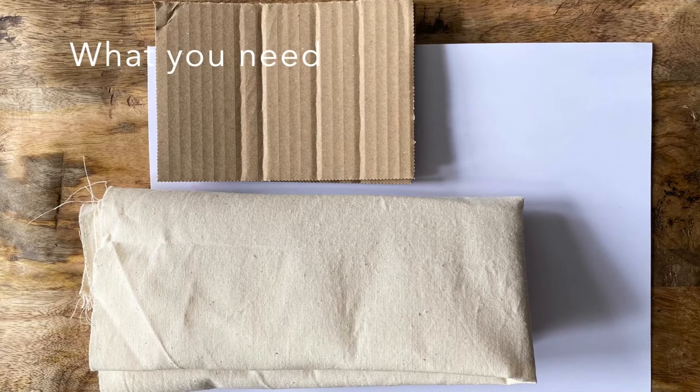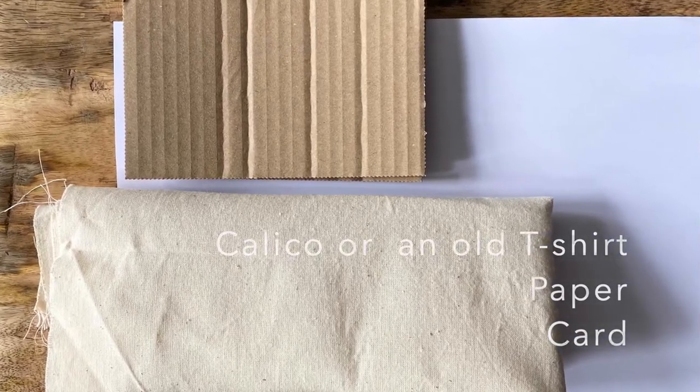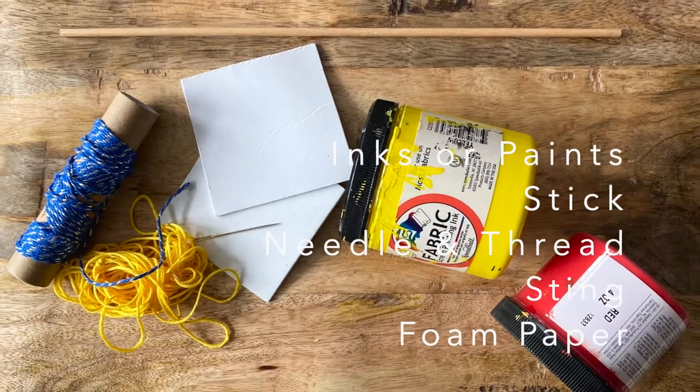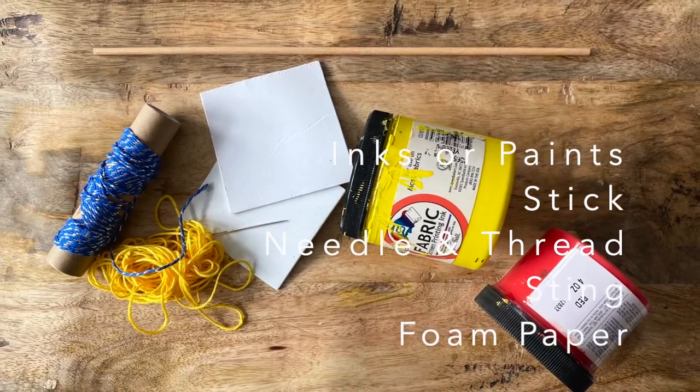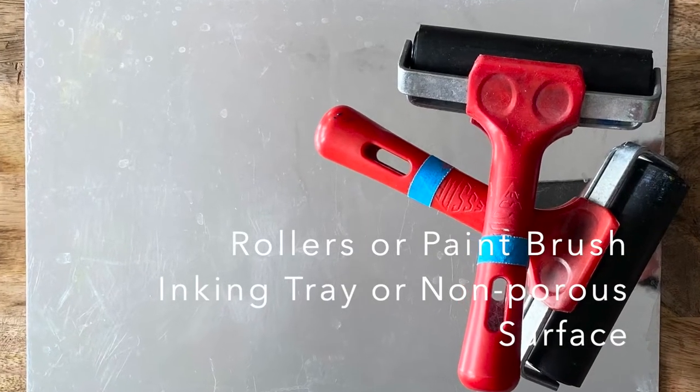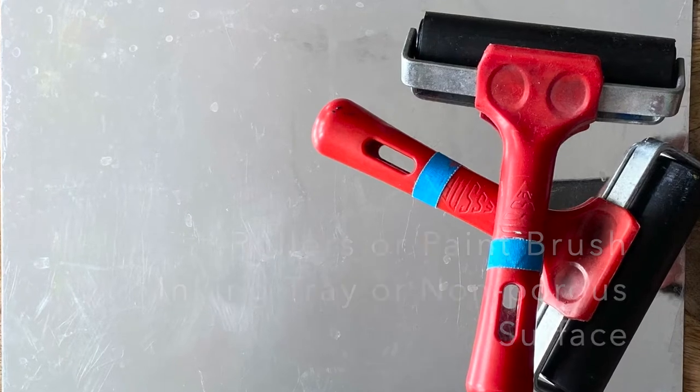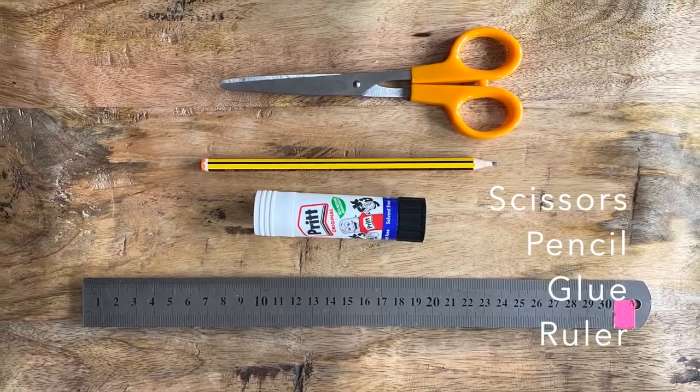For this workshop you will need some Calico, paper and card, printing inks, stick, thread, needle, string and foam paper, rollers and an inking tray, scissors, a pencil, a glue stick and a ruler.